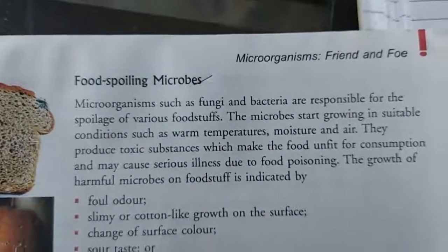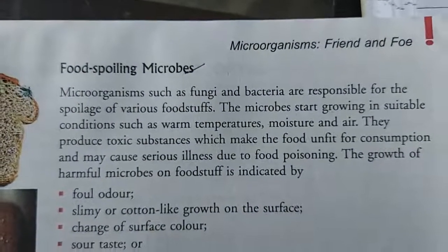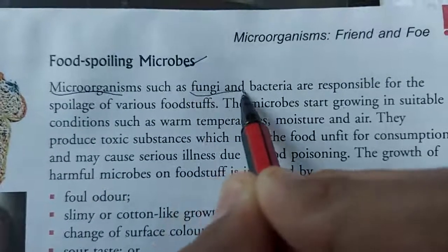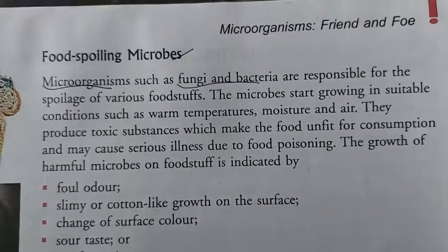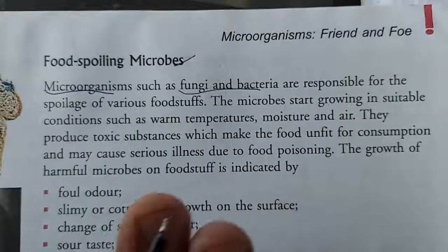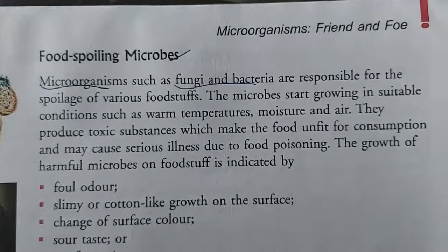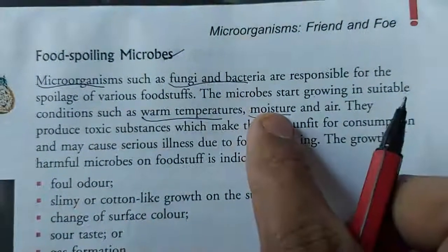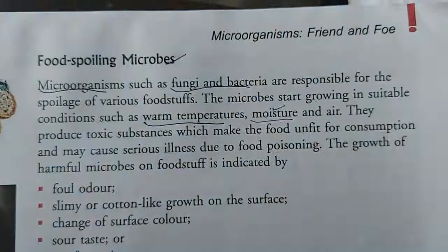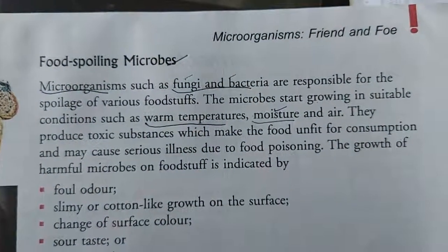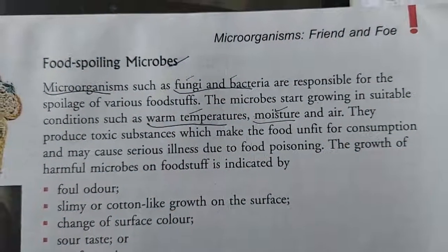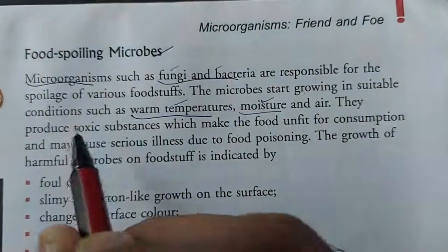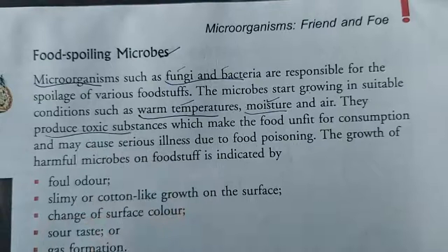The next category of microorganisms is food spoiling microorganisms. They mainly spoil our food. The microorganisms which mainly spoil our food are fungus and bacteria. Keep this concept in mind — fungus and bacteria are mainly responsible for the spoiling of food. They grow in warm temperature and moist environments, and in such conditions both bacteria and fungi will grow at a faster speed.